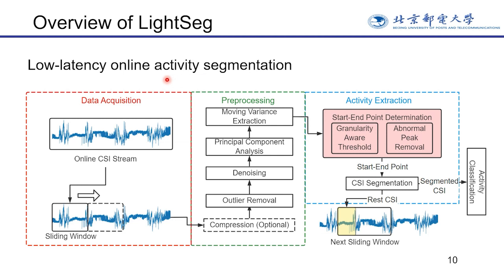Now let me introduce the overview of LISAC's design. First, we design a sliding window to obtain CSI data online. If users use hardware with limited resources such as embedded devices, they can compress CSI data before processing. Because the algorithm complexity of LISAC is low, it is usually unnecessary to enable compression. The preprocessing module processes the CSI into data easy to segment. Then the activity extraction module determines the start and endpoints of activities. The resulting CSI segment containing the activity will be used for the following activity classification. The rest of the CSI after segmentation in the current window will be spliced into the next window to avoid incomplete activity extraction.